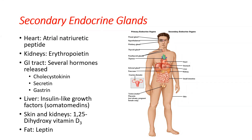The skin, whose main function is barrier protection and immune defense, also plays a role in vitamin D production — it helps activate the inactive form of vitamin D to the active form. And fat tissue, mainly for energy storage, also secretes leptin, which is one of our hunger hormones.